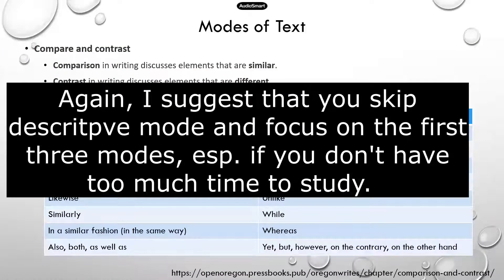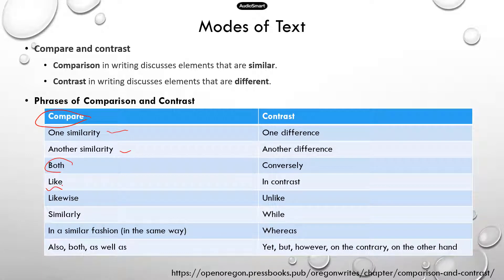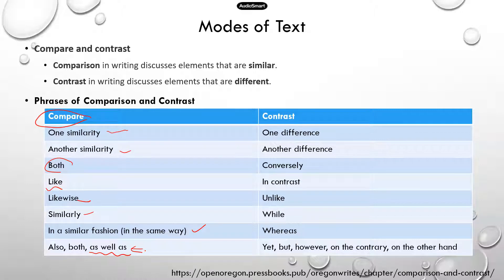There are keywords and phrases you can use to determine whether it's a comparison or a contrast. If it's a comparison, it's about similarities. The author could say 'one similarity is,' 'both,' 'A is like B,' 'likewise,' 'similar,' 'in a similar fashion,' 'in the same way,' or 'as well as' — that last phrase appears specifically in the official TEAS manual.